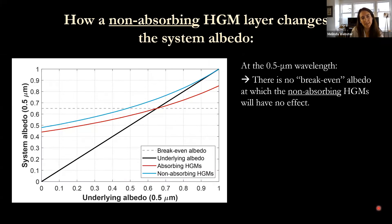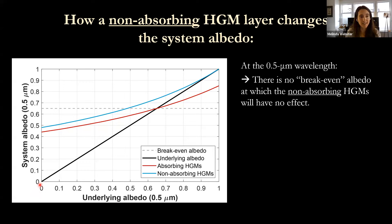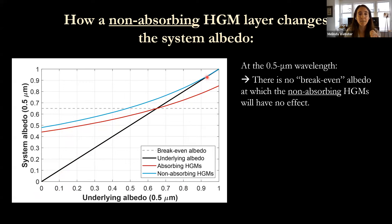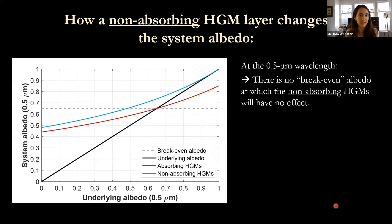Revisiting the system albedo at 500 nm: absorbing HGMs increase albedo for low-reflectivity surfaces but decrease it for high-reflectivity surfaces. If we use non-absorbing HGMs, there's an increase in albedo over all underlying reflectivities — no break-even albedo. This would ultimately raise surface albedo across all surfaces, if they can be manufactured.